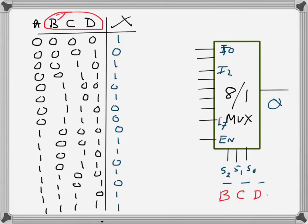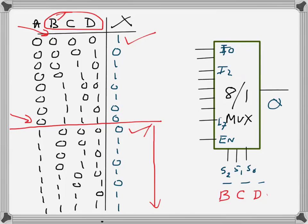When BCD is 0, either one input or the other will be selected. We can divide the truth table into two parts. In the first part, BCD changes from 0 to 7 (000 to 111); similarly in the second part, BCD again changes from 0 to 7. The only difference between these two parts is that A=0 in the first part and A=1 in the second. For each mux input, I will connect either A, A-bar, 1, or 0.